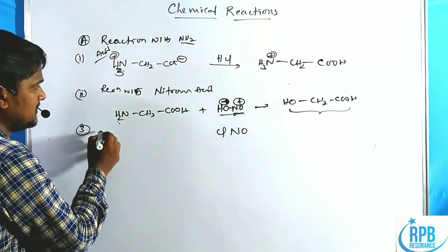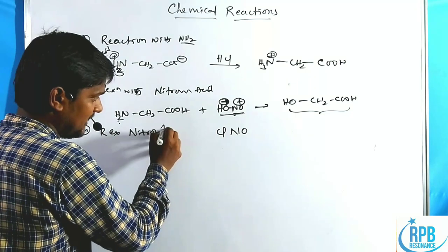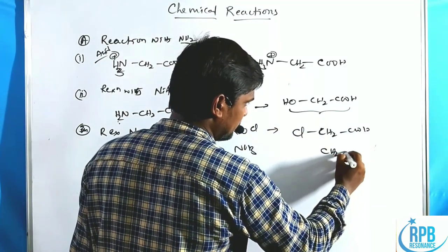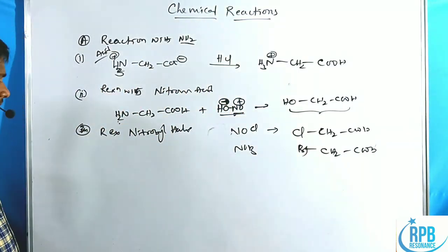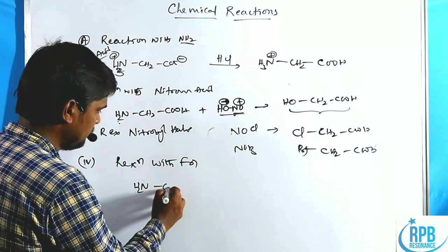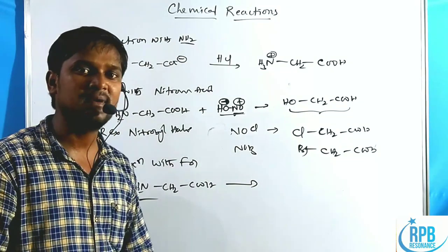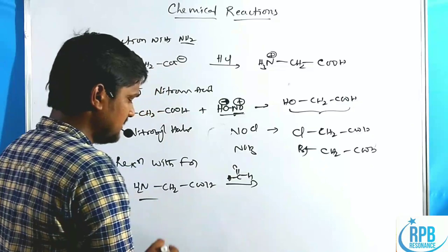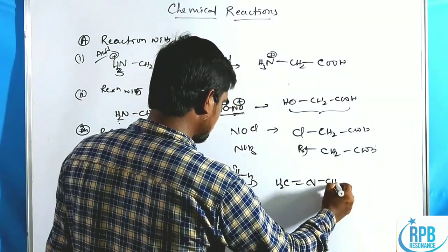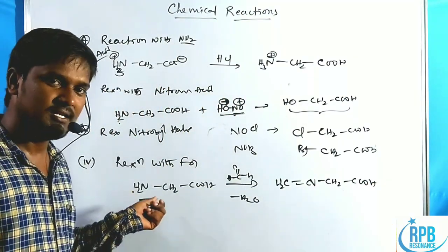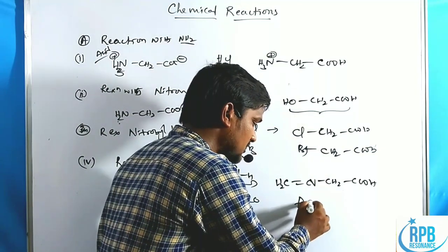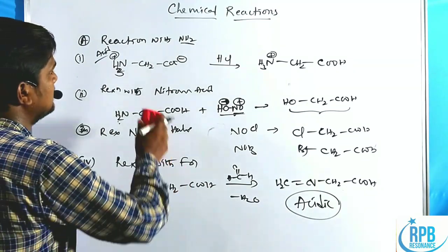The third reaction is with nitrosyl halides — NOCl or NOBr. These react in a similar manner to give the corresponding halide. The fourth reaction is with formaldehyde. The amine functional group, which has basic nature, is treated with C=O of formaldehyde. Loss of water (two H from amine, one O from formaldehyde) gives CH2=N-CH2-COOH. The amine loses its basic character and the compound becomes acidic in nature.